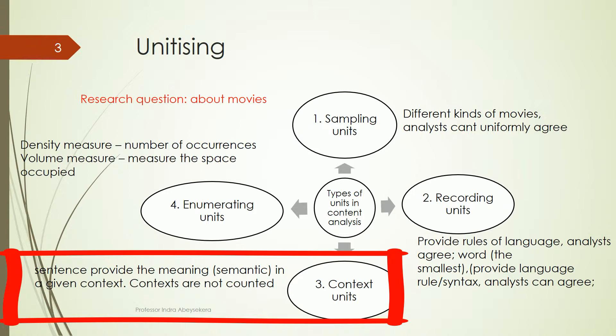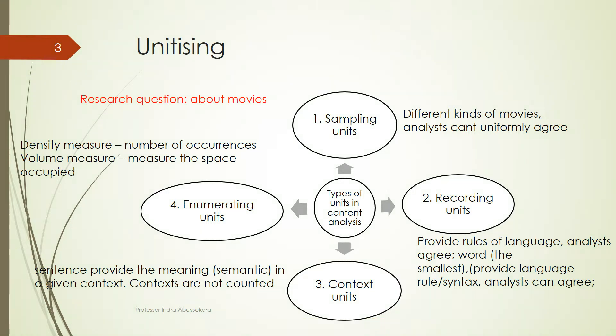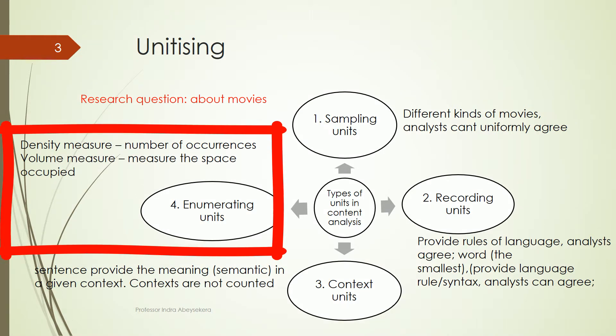The fourth is to come up with enumerating units. There are two major types of enumerating units. One is a density measure, the number of occurrences, or a frequency measure. The other is a volume measure, a measure about the space occupied by the content.